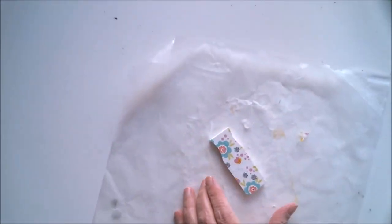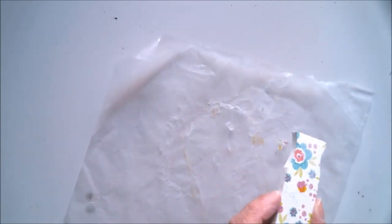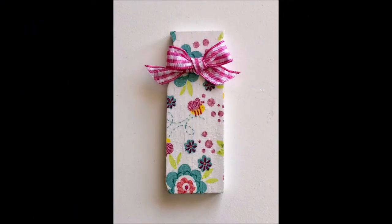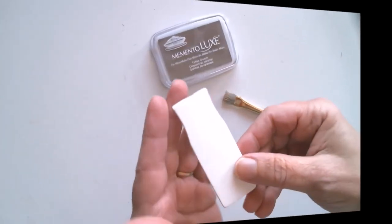And once I was happy with it, I added another layer of Mod Podge over the top to make sure that it's sealed completely. I added a pink and white checkered bow and I think it came out beautiful. Okay, on to the next one.